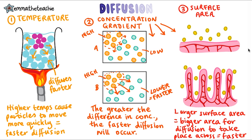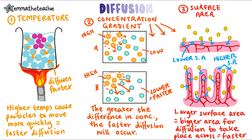In which diagram will absorption happen fastest? The top one has a very flat membrane surface, giving a lower surface area. The bottom diagram has highly folded membranes, giving a higher surface area. In the top diagram, molecules will only be absorbed when they're right next to the membrane. In the bottom one, many more food molecules are in proximity, so a much higher rate of diffusion will happen. The bottom one is actually a diagram of your small intestines, shaped like this to maximise food absorption in your body.